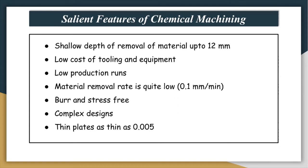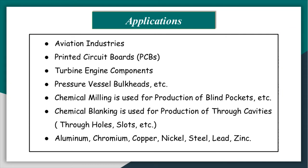Let us talk about the applications of chemical machining. This process is very successfully and extensively used in aviation industries. It is also a very good process for making printed circuit boards (PCBs), jewelry, turbine engine components, pressure vessel bulkheads. Chemical milling is used for production of blind pockets.